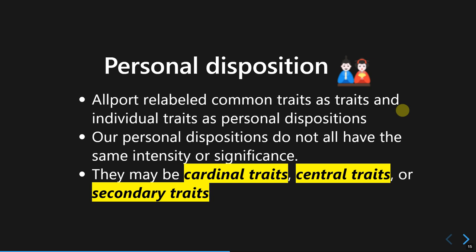Allport sometimes uses the term 'personal disposition' to describe individual traits, so that people would not confuse the individual and collective parts of our personality. Personal disposition can vary depending on intensity and significance, which is why Allport divided personal disposition into three different types: cardinal traits, central traits, and secondary traits.